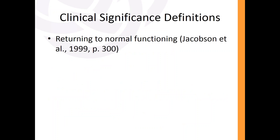So, definitions. There are two main kinds of definitions. One is returning to normal functioning. When you see that someone at the beginning of treatment is depressed, anxious, or has some really debilitating problem or condition, what you're hoping for is that after treatment, they will return to the range within which we could call normal — or typical — functioning. The definition of a clinically significant improvement is that you're no longer within the range of being severely depressed or anxious, but you're back in the range of being quote-unquote normal.